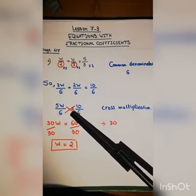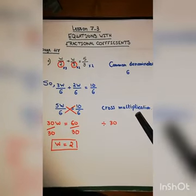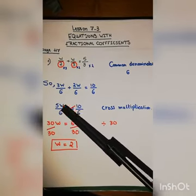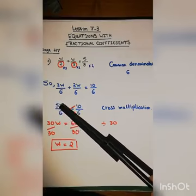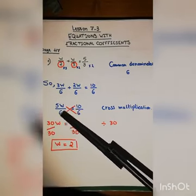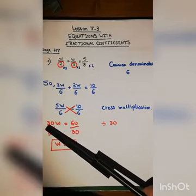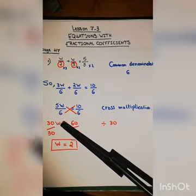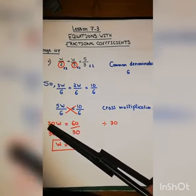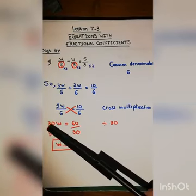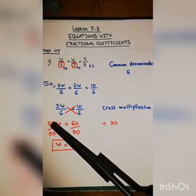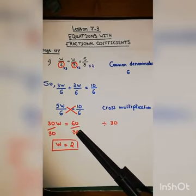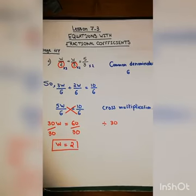To solve a fractional equation like this, we use cross multiplication. So six times ten equals sixty, and five w times six equals thirty w, giving us thirty w equals sixty. Dividing both sides by thirty, w equals sixty divided by thirty, which is two. So w equals two.